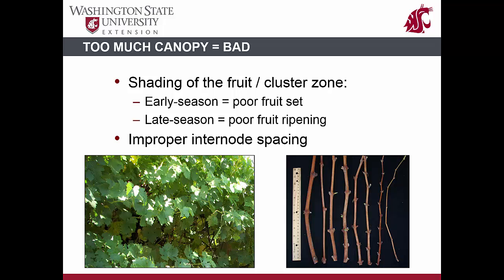In addition to challenges associated with overall canopy volume, high vigor of individual shoots, noted by rapid elongation of the shoot and internodes, can also cause issues with pruning and cold hardiness. One way to tell if shoots are growing too rapidly is to measure the internode length, which is the space between nodes on a shoot. For most production areas, two to four inches is the ideal internode length. Internodes less than two inches indicate that the vine is likely very stressed and not developing a good canopy. If they are longer than four inches, it means that there is too much energy and the canopy is growing too rapidly.